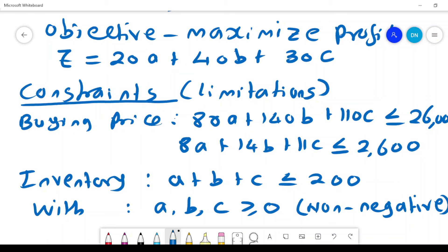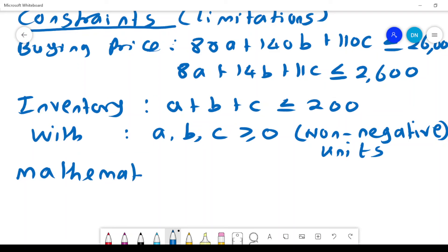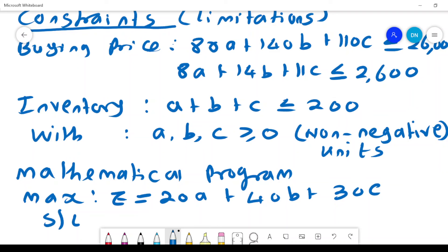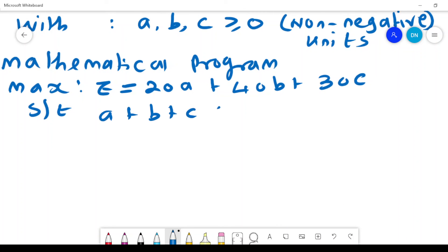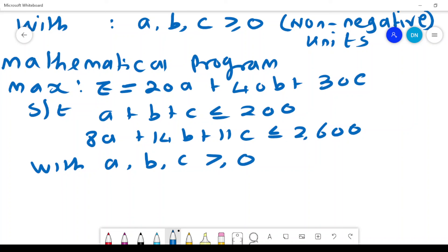We can write our mathematical program. We maximize Z = 20a + 40b + 30c subject to a + b + c ≤ 200, 8a + 14b + 11c ≤ 2,600, with a, b, c ≥ 0. That is the problem that we have formulated for that specific example.